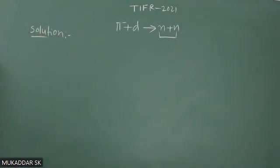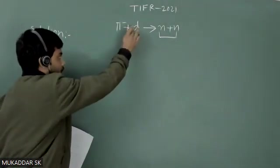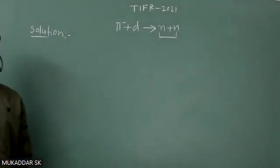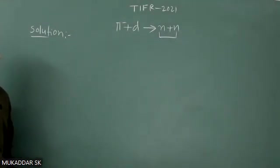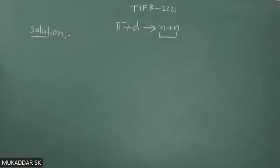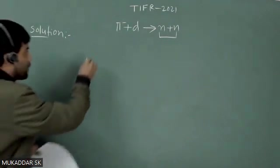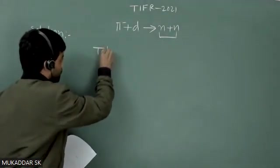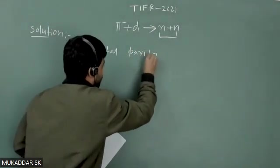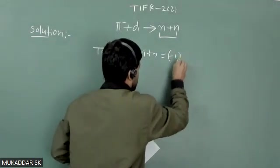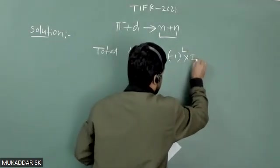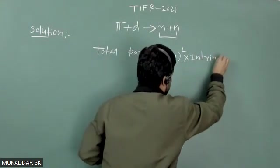As we know, the interaction between pi meson and neutron is always governed by strong interaction. For strong interaction, parity should be conserved. Now let us see how we will calculate that parity. Total parity is nothing but minus one to the power L — this is the orbital part — and then you have to take the intrinsic parity.